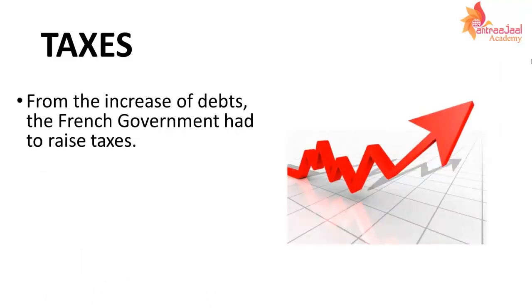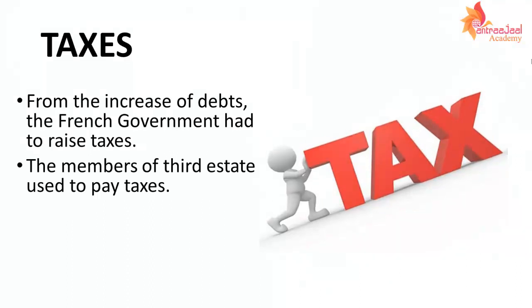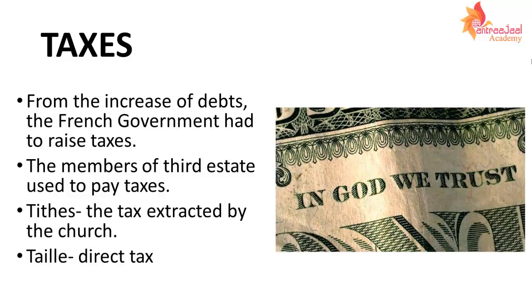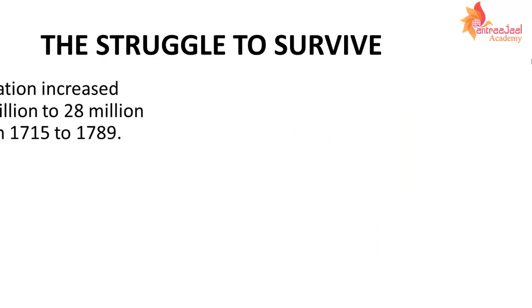अब हम बात करेंगे उन taxes की जो इन्हें pay करना पड़ता था। जब France में debt बढ़ा, तब French government ने सोचा की taxes को raise कर दिया जाए। और इस tax को pay करने वाले होते थे सिर्फ third state। Tithes जो की church tax इकट्ठा करता था, और taille यानि की direct tax। और इसके साथ ही बहुत सारे indirect tax भी होते थे जो third state को pay करना पड़ता था।